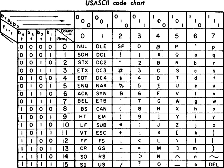The X3 Committee made other changes, including new characters, renaming some control characters, and moving or removing others. ASCII was subsequently updated as USAS X3.4-1967, then USAS X3.4-1968, ANSI X3.4-1977, and finally ANSI X3.4-1986.